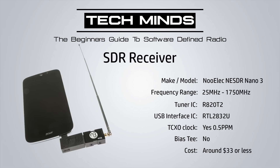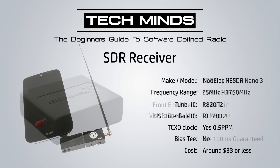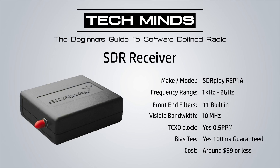Moving up into the higher end of SDR receivers we have the SDRplay RSP1A. Looking at the frequency range, it goes from 1kHz all the way up to 2GHz. It has 11 front-end filters built in and a visible bandwidth of 10MHz, meaning you can view 10MHz at a time in the SDR software.